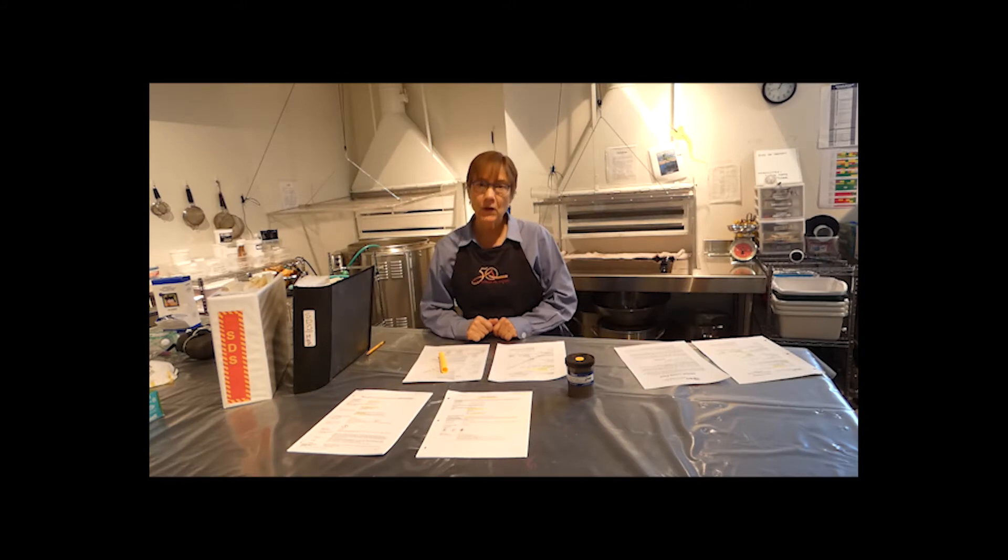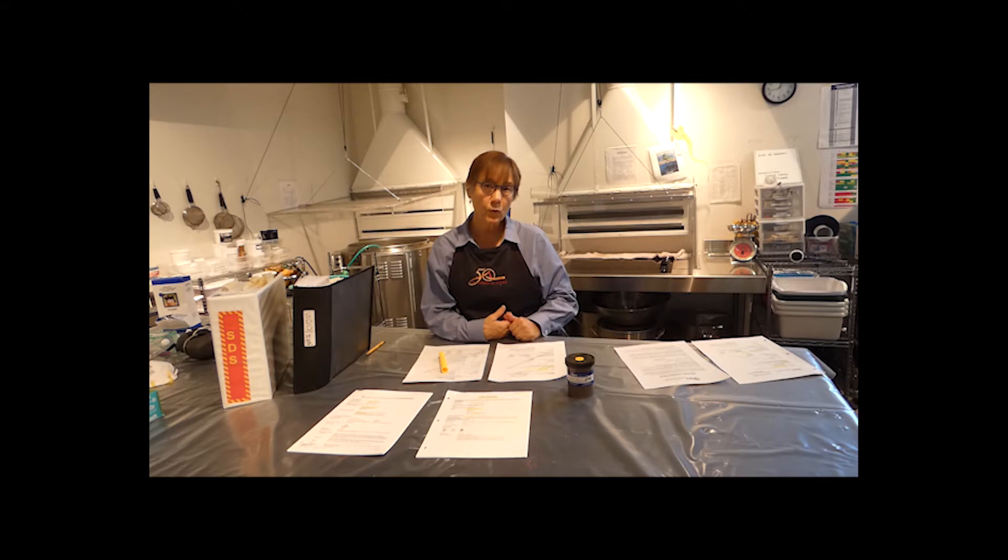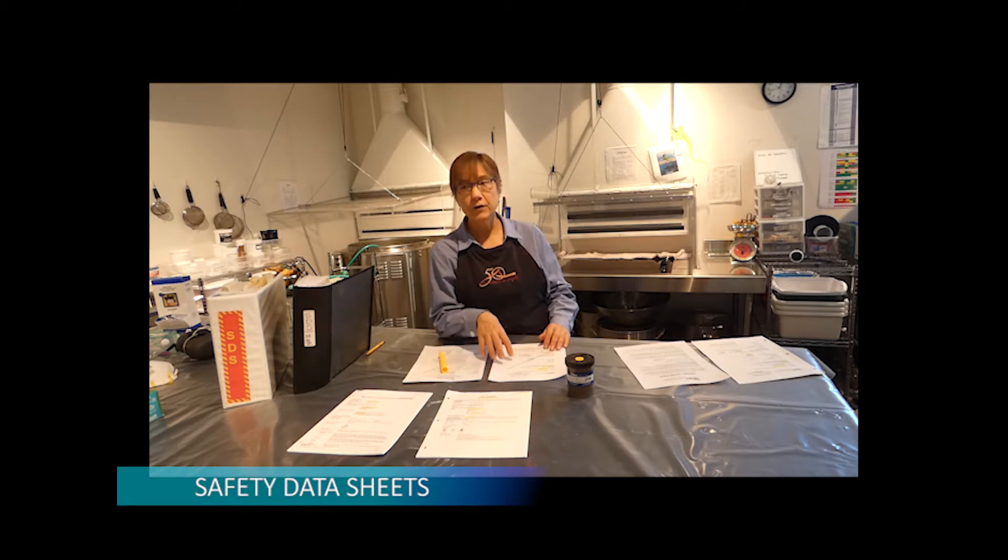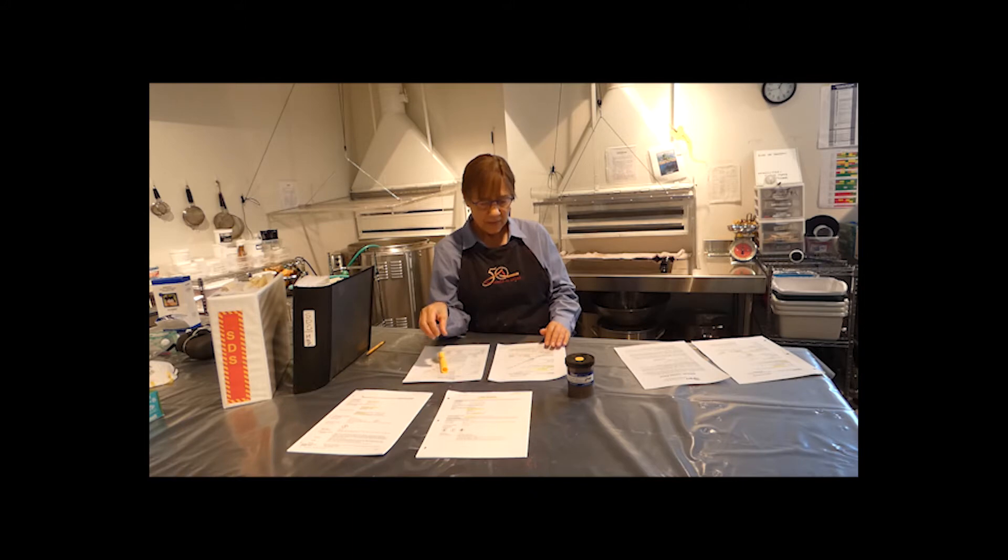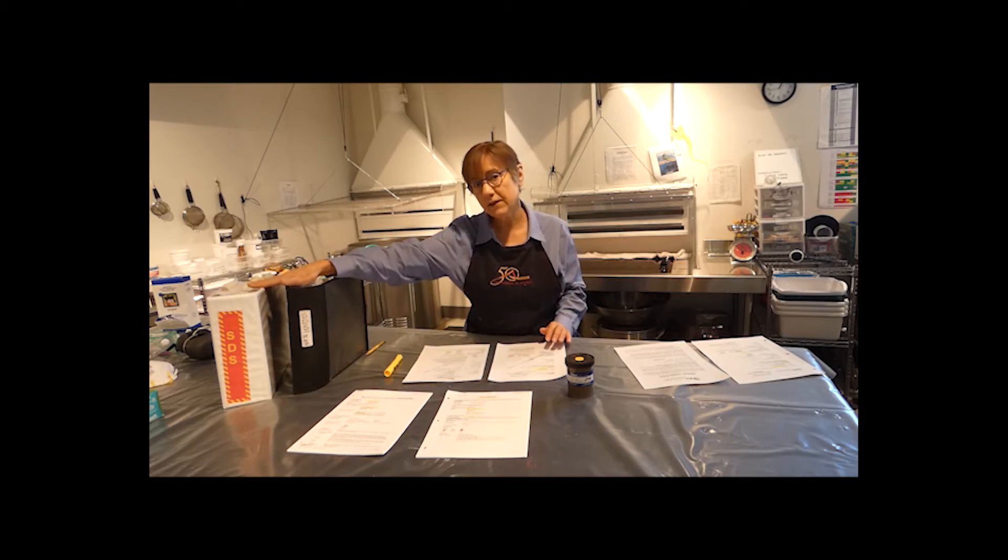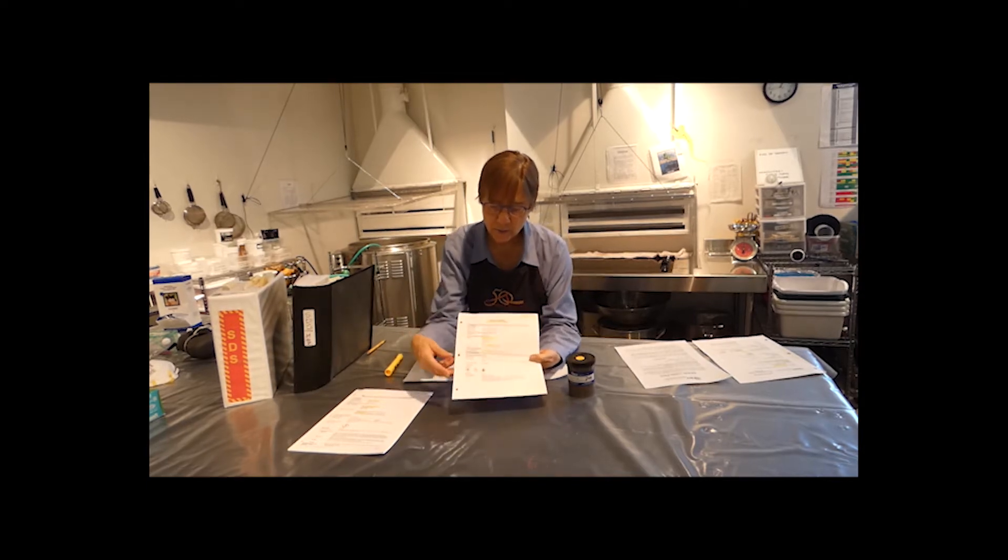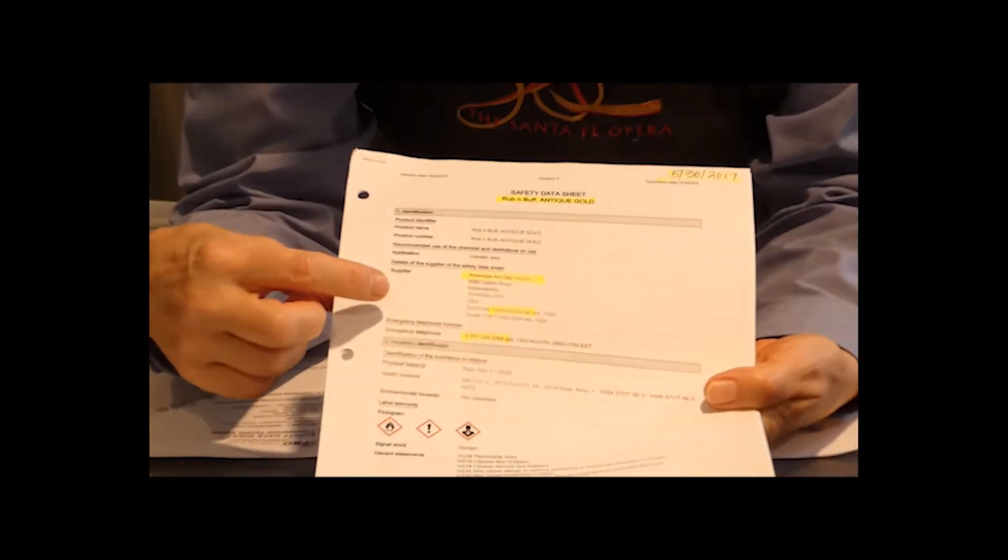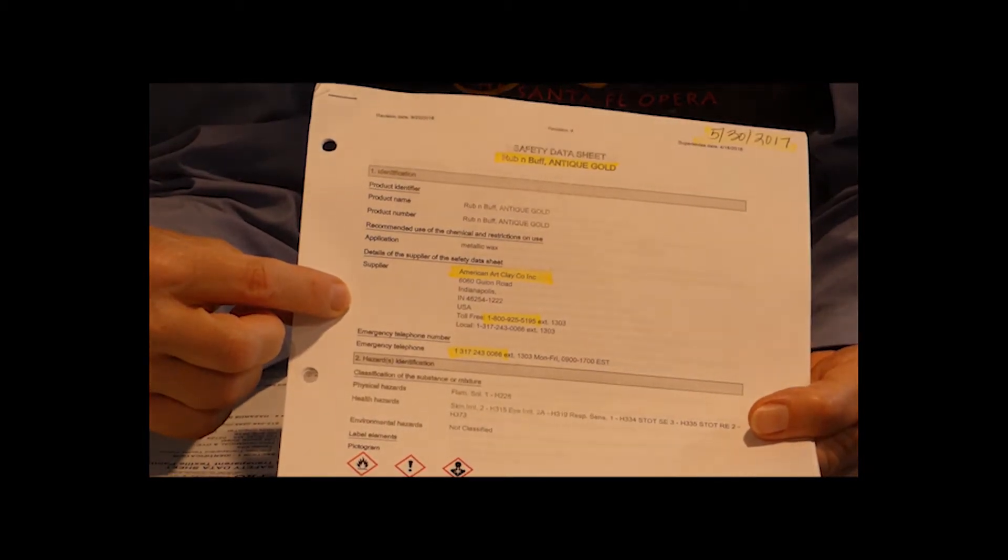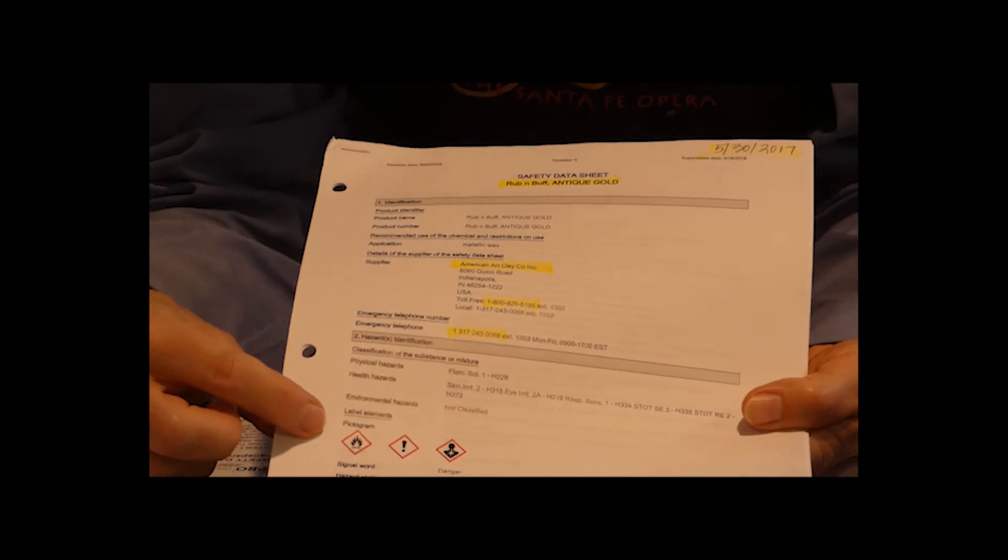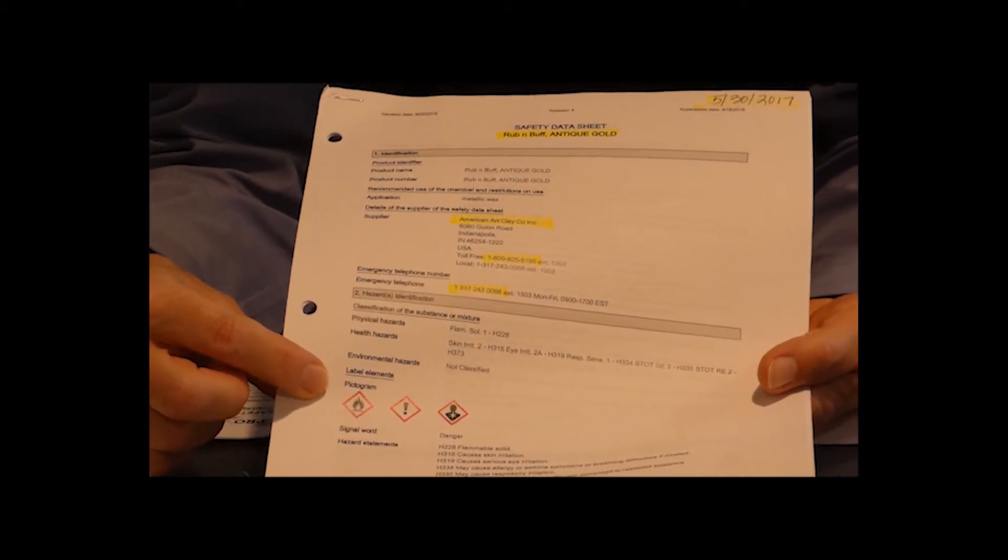Whenever you work with a new product, or you need to refresh your memory about a product that you haven't worked with in a while, you should reference the material safety data sheets. They're no longer called material safety data sheets because there's been new legislation, and they're now safety data sheets, which have a great deal more information for you in them. Every company and school is required by law to have safety data sheets on every product that you work with. What we do here is we keep an archive of everything in the dye shop that we work with. What you'll find in the safety data sheet is information about the manufacturer, any contact information for if you have a safety problem with the product.